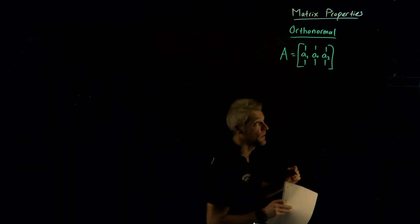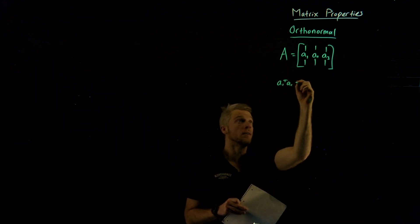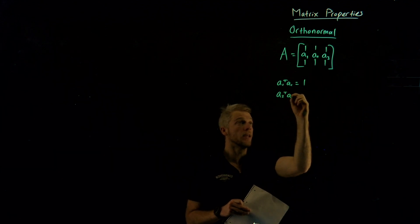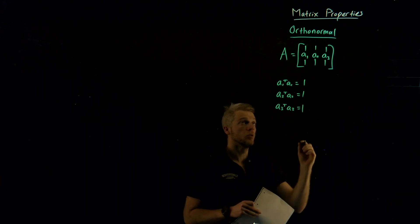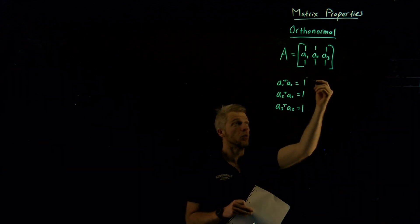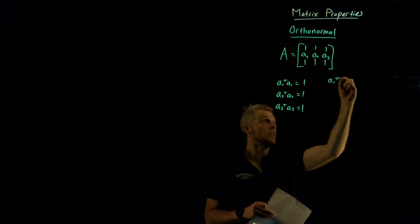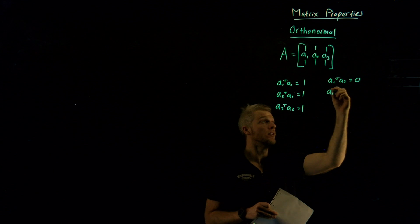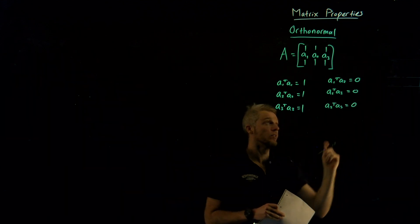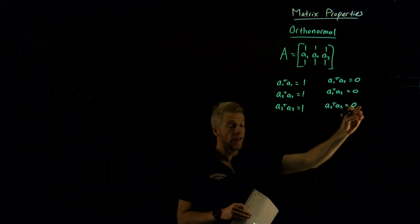Let me write it down step by step. This matrix A is orthonormal if it satisfies the following: A1 transpose A1 — also known as the two-norm squared — equals one; A2 transpose A2 equals one; and A3 transpose A3 equals one. That's one crucial element. The other property is that when we dot different combinations together we get zero: A1 transpose A2 equals zero, A1 transpose A3 equals zero, and A2 transpose A3 equals zero. So dot products with themselves equal one, but dot products with anything else equal zero.